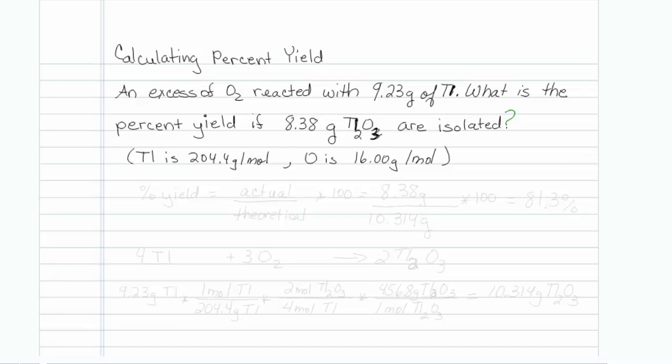The formula for percent yield is equal to actual divided by theoretical times 100. We have the actual, which is the 8.38 grams of material that's isolated. What we need to find out is the theoretical.